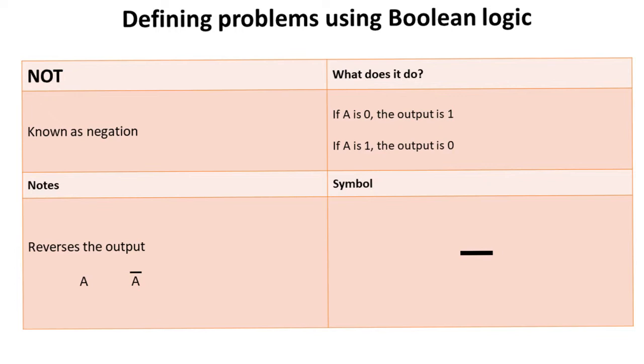The symbol in AQA used for negation is a line, and we place it above the Boolean statement that we want to NOT. This represents A, and then the line above it represents NOT A.